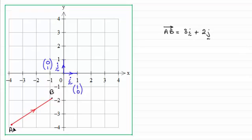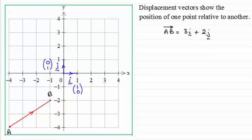Like for instance when we're down here, it's still going to be three units across, two units up. So displacement vectors show the position of one point relative to another.